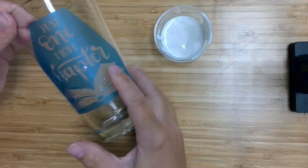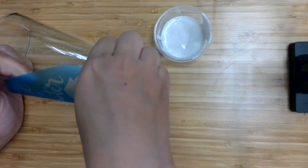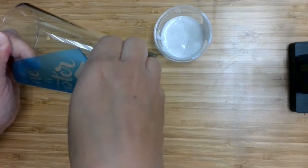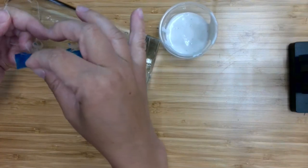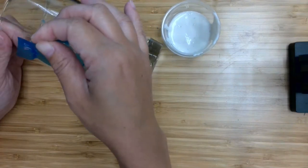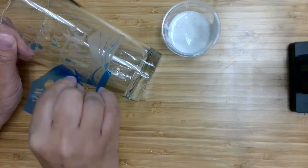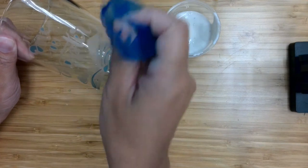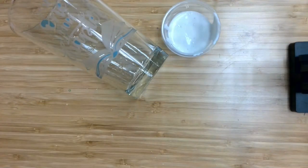And now I can start pulling this stencil off. And whatever is left behind should be etched. Okay, now I've just got little bits there to take off.